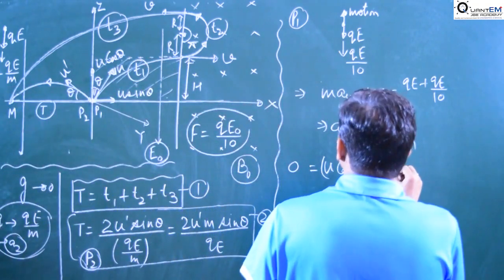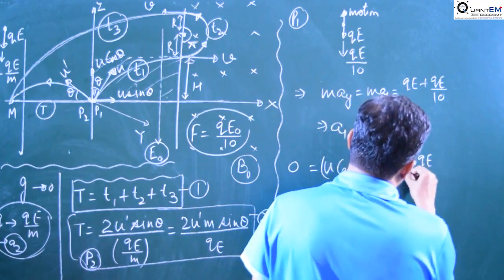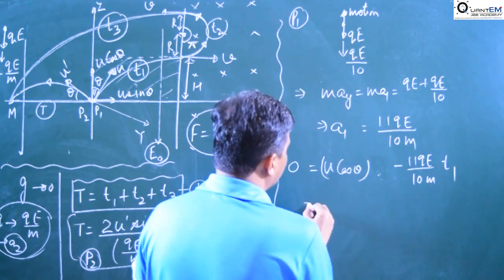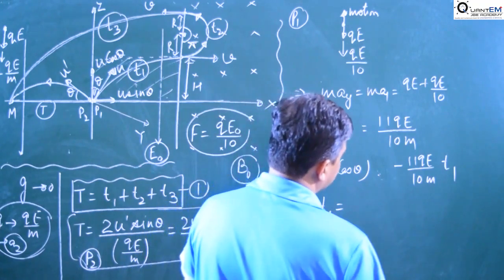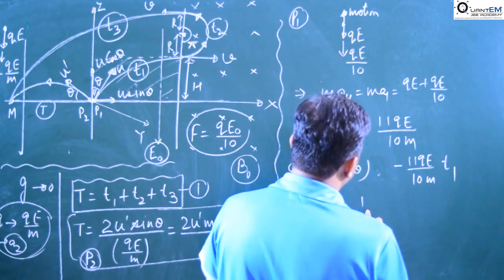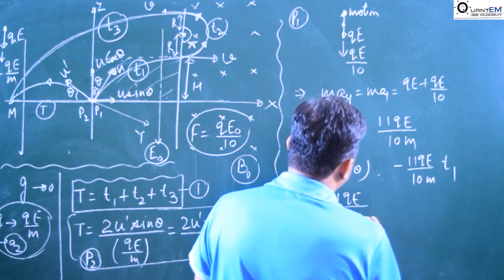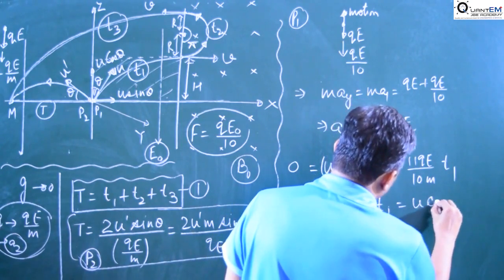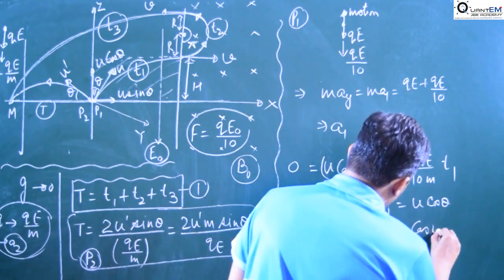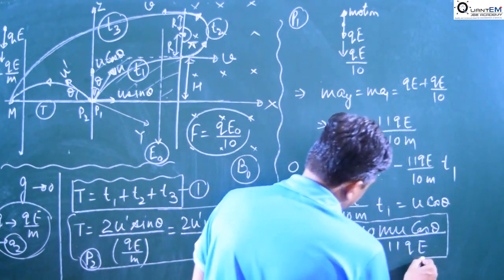The vertical velocity at maximum height is zero. Using kinematics: U·cosθ minus (11qE/10m)·t1 = 0. Rearranging, (11qE/10m)·t1 = U·cosθ, giving t1 = 10mU·cosθ / 11qE. This is the value of t1 — equation 3.